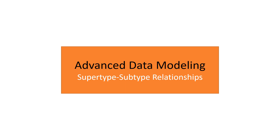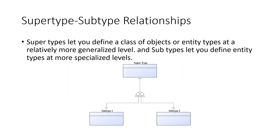Today, I'm going to show you how to create supertypes and subtypes. You often use them for modeling data in your database, so this is a really useful thing to know. Supertypes let you define a class of objects or entity types at a relatively more generalized level, and subtypes let you define entity types at more specialized levels.